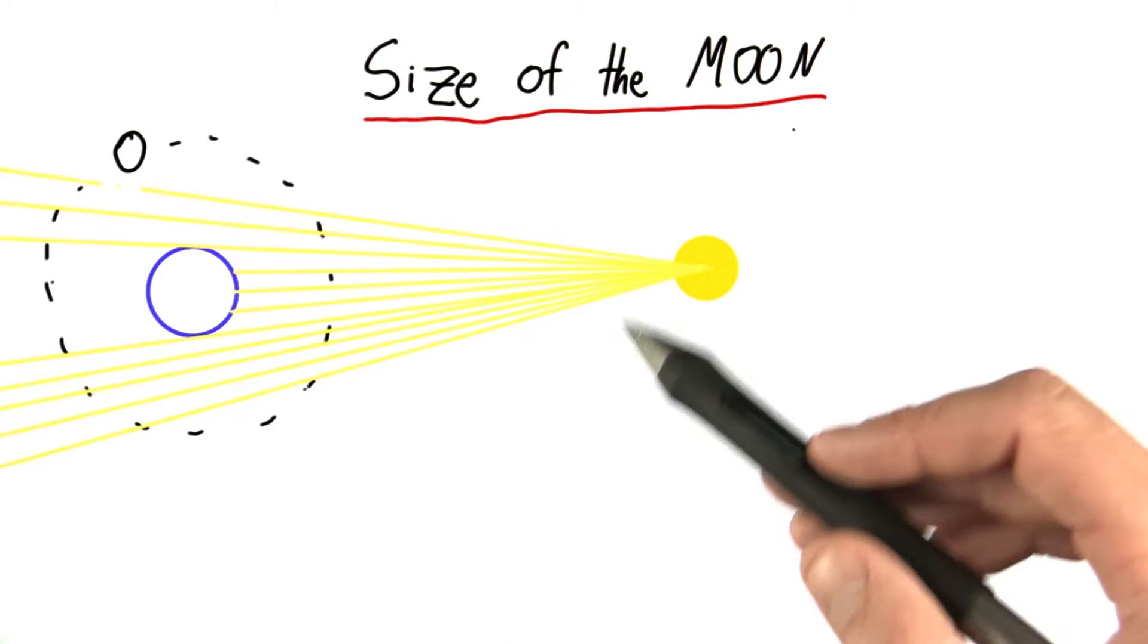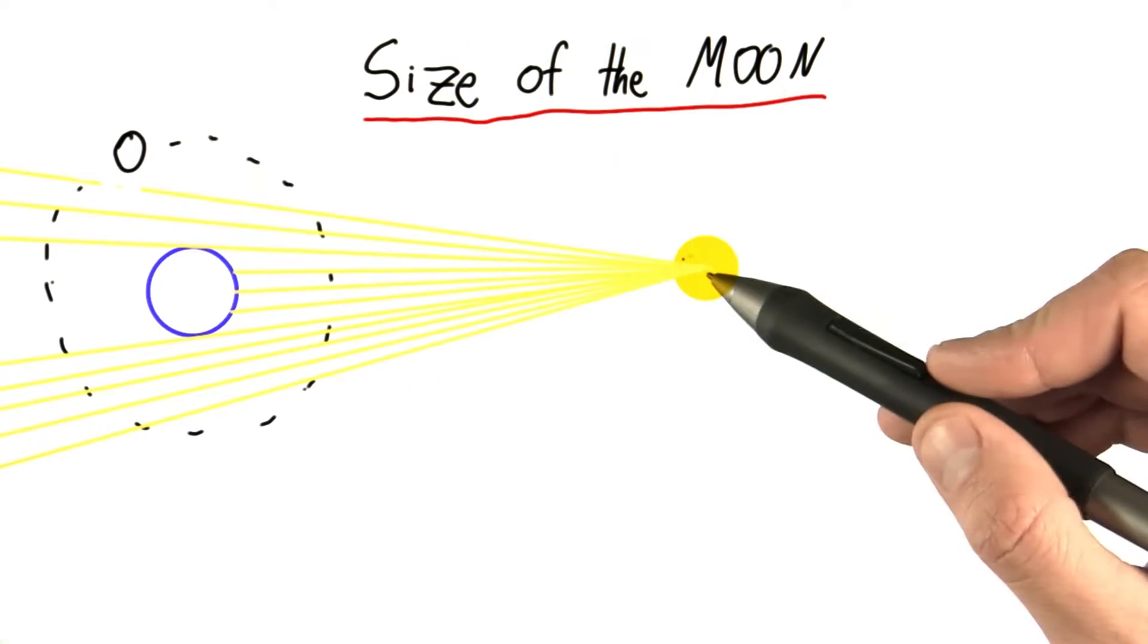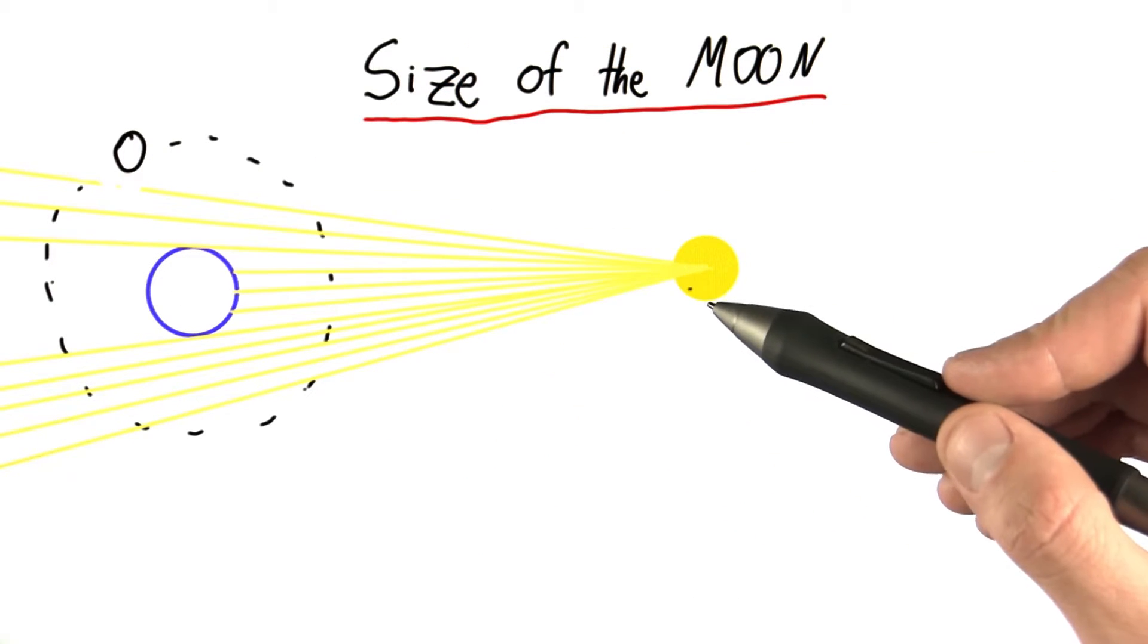Here, I've drawn a little diagram of what's going on with the earth, the moon, and the sun. Now, keep in mind, this is not to scale at all.